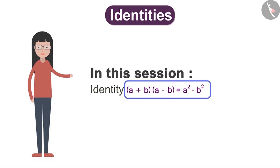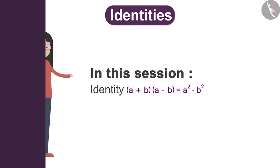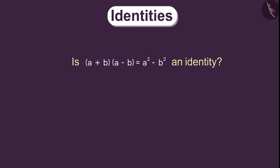This equation says that if we add two variables a and b and multiply it with a minus b, then it is equal to a square minus b square. Can you check if this is an identity? Let's see.